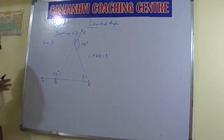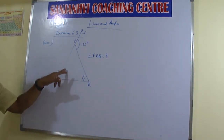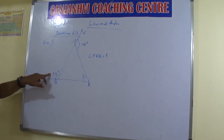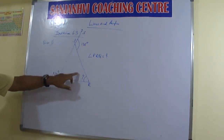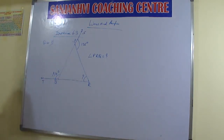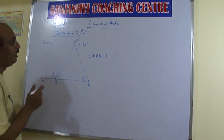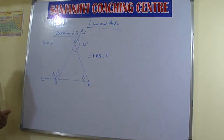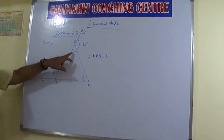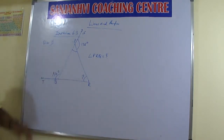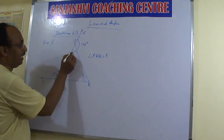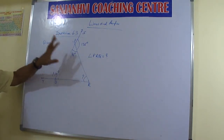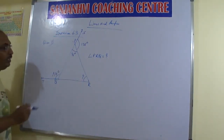We already studied the angle sum property — that the sum of three interior angles equals 180 degrees, and the exterior angle equals the sum of the interior opposite angles. Since the exterior angle at P is 135 degrees, the interior angle at P is 180 minus 135, which gives us 45 degrees.